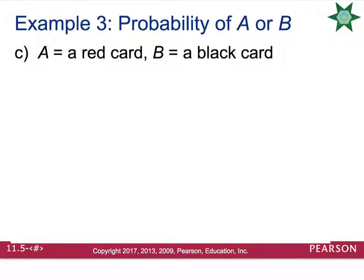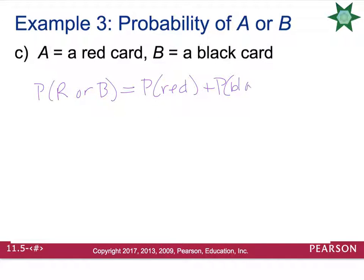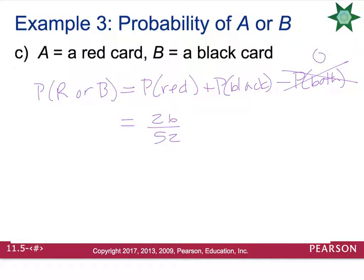How about the probability that our card is red or black? We need P(red) + P(black) − P(both). There is no card that is simultaneously red and black, so this is a mutually exclusive event and the probability of both is 0. There are 26 red and 26 black cards out of 52, so 26/52 + 26/52 = 52/52, meaning you are 100% guaranteed to draw a red or black card.